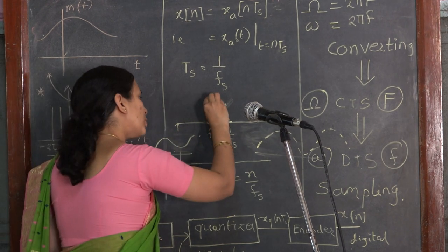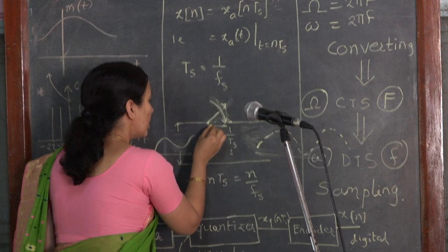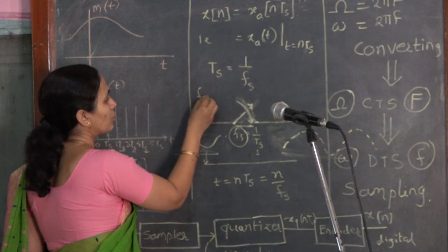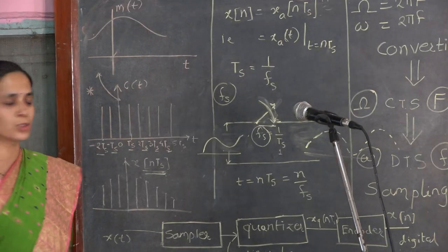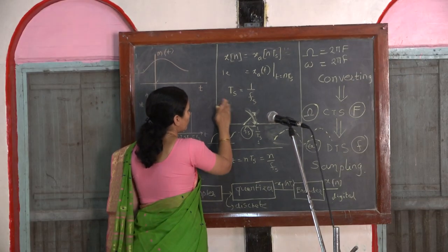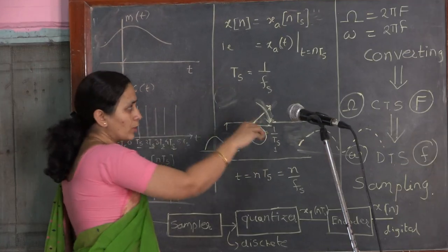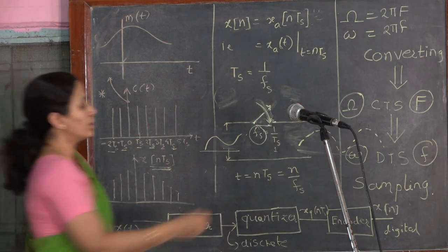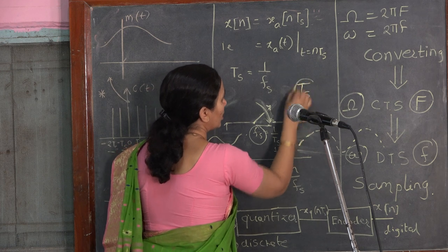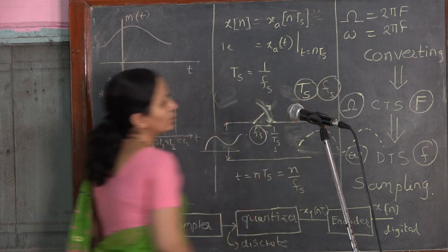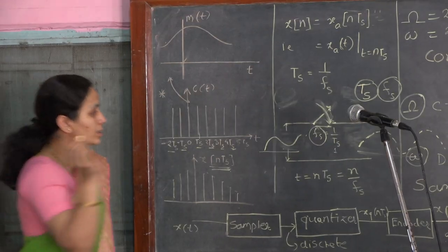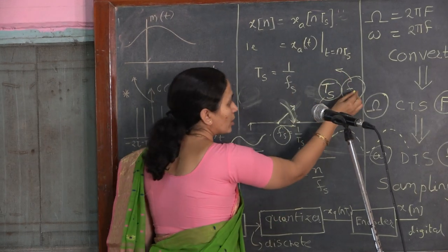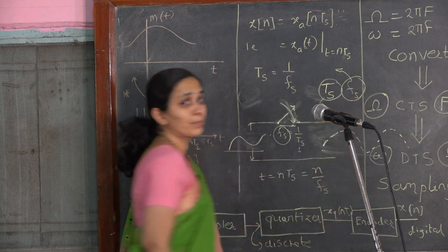The frequency with which this switch is operated is known as the sampling frequency — this is the heart of this unit and will be used extensively henceforth. The time period for which the switch is opened and closed is denoted as Ts and is known as the sampling time. Ts is the sampling time and fs is the sampling frequency, also known as the sampling rate.